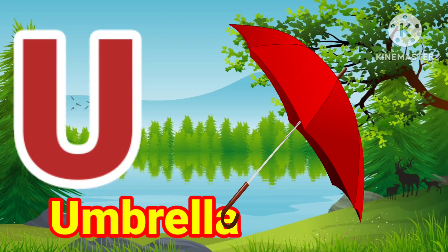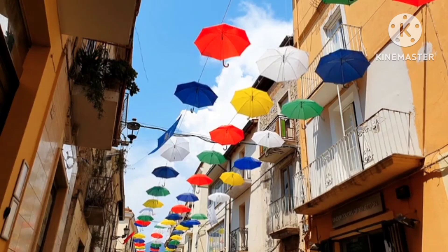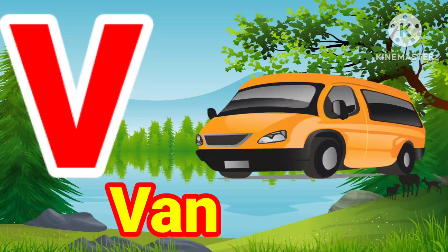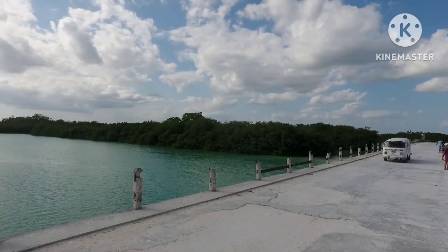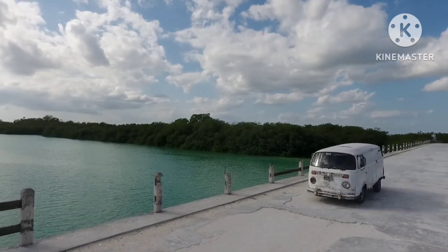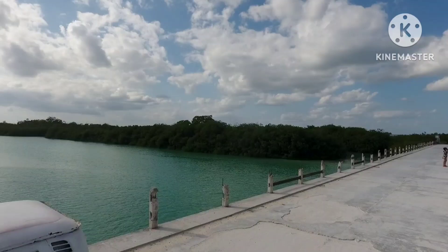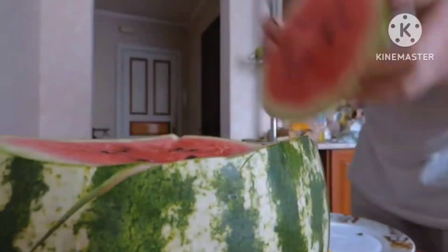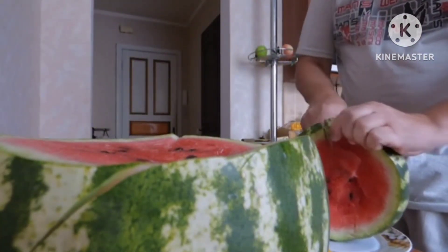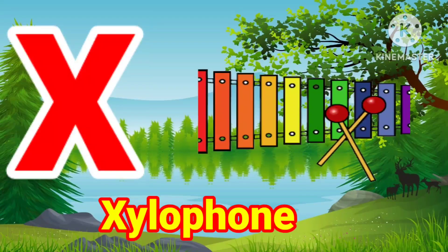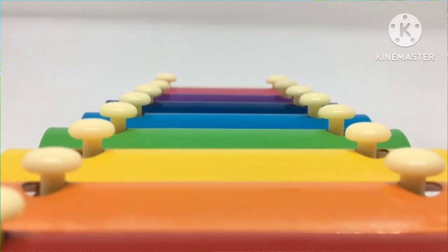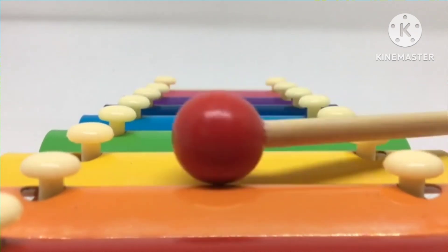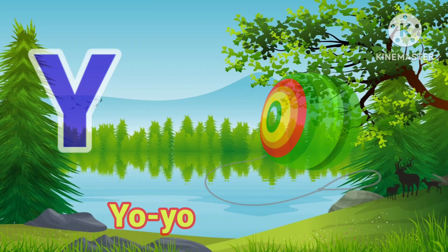U for umbrella, V for bin, W for watermelon, X for xylophone.